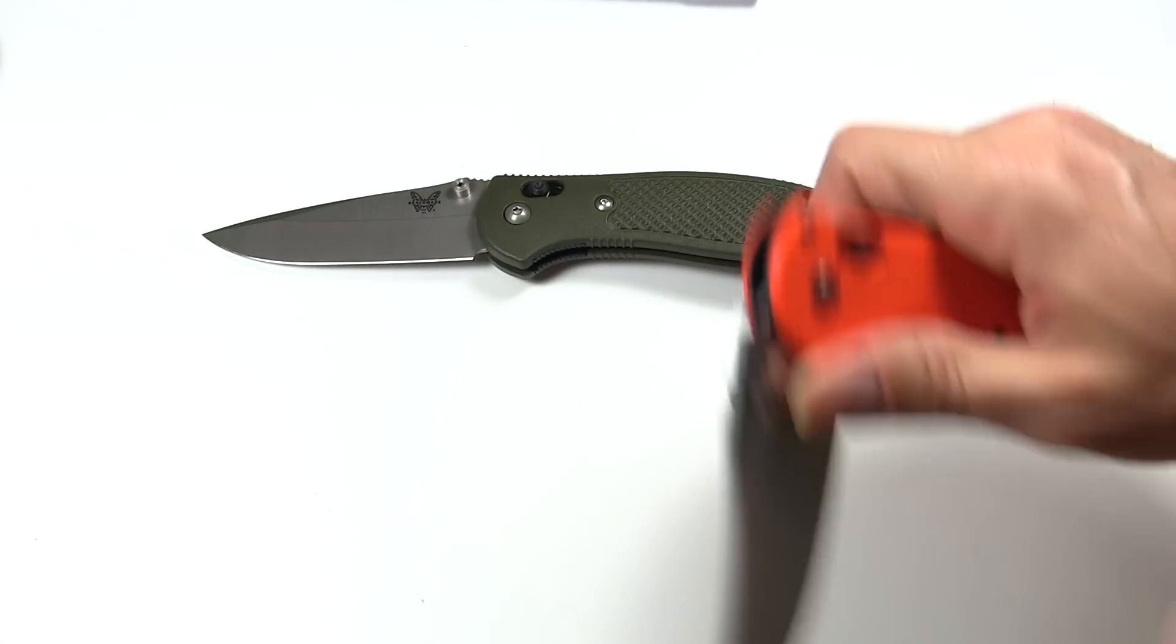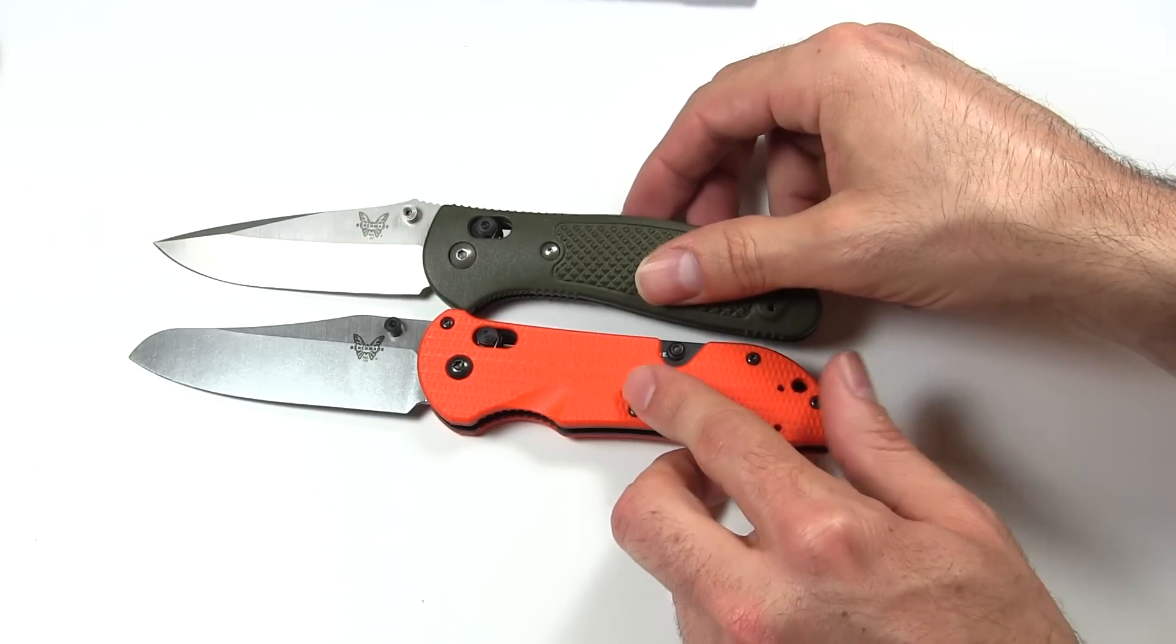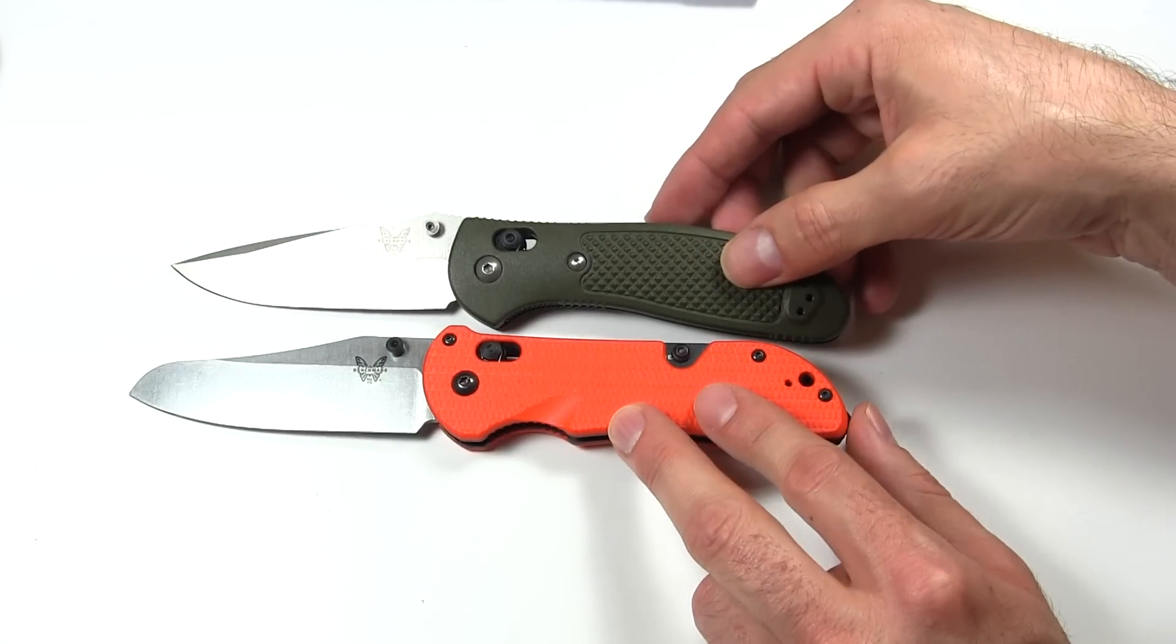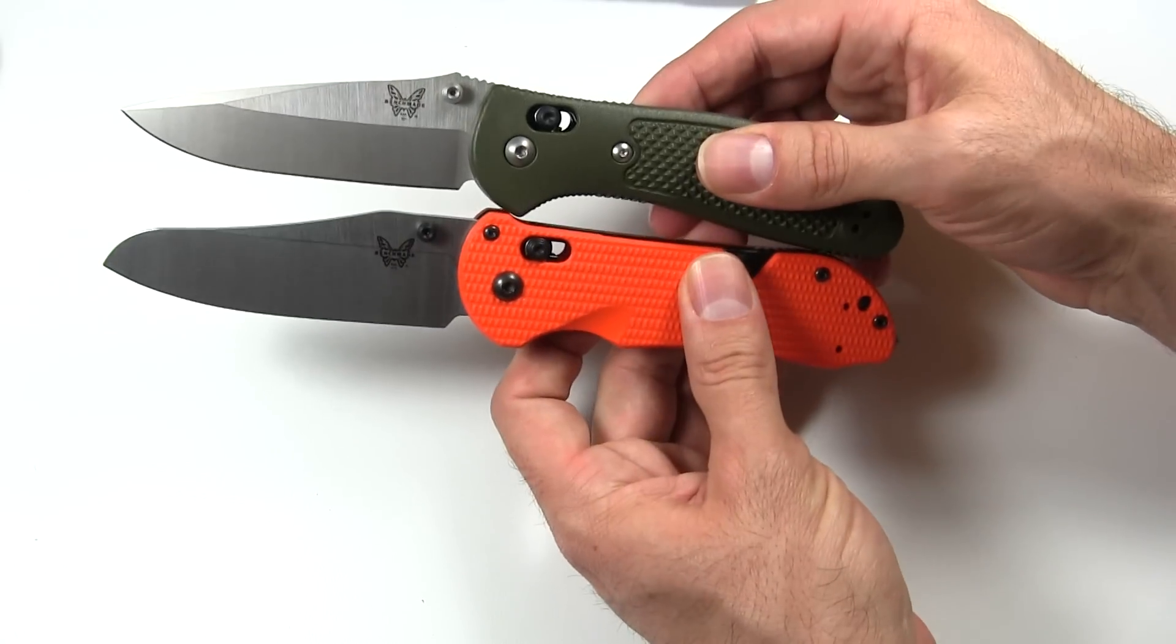Open, the Griptilian, 8.07 inches, and that Triage is 8.2 inches. A little bit longer there.